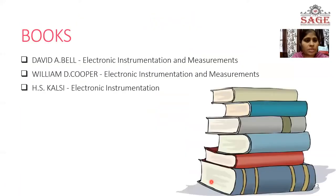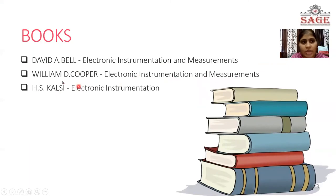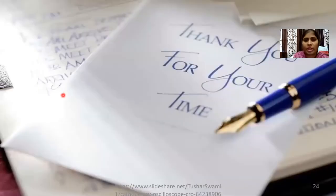These are the reference books: Electronic Instrumentation and Measurements by David A. Bell, Electronic Instrumentation and Measurements by William D. Cooper, and Electronic Instrumentation by H.S. Kalsi. You can refer to these books for the CRO. Thank you, friends. See you again. Bye.